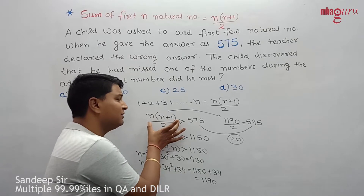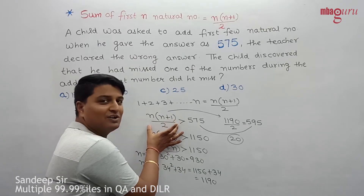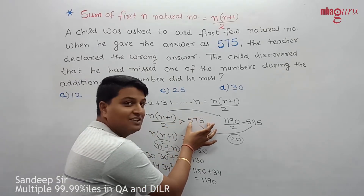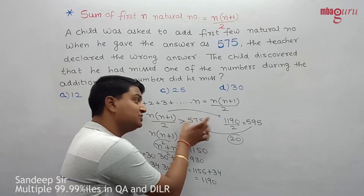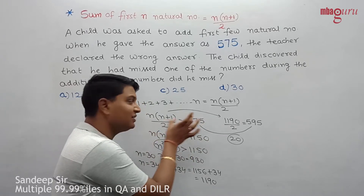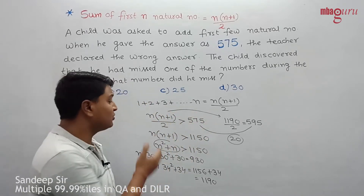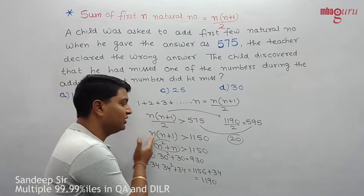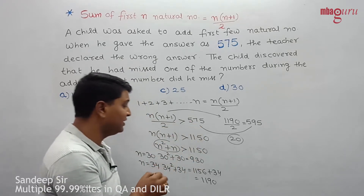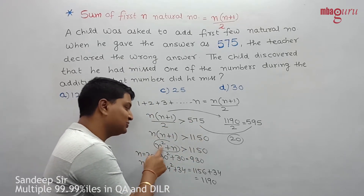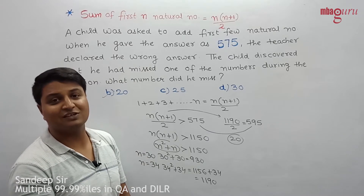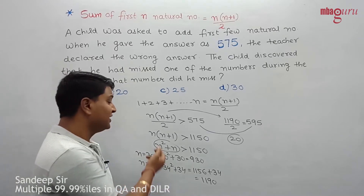To recap: if any number is missing, the answer will be less than the correct sum. We set up n² + n greater than 1150. We found n = 34 gives n² + n = 1190, which is the first value exceeding 1150.